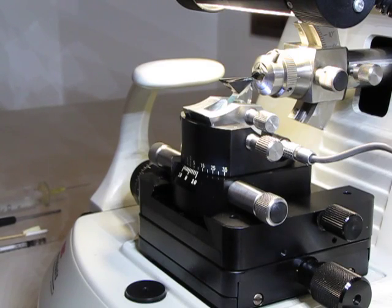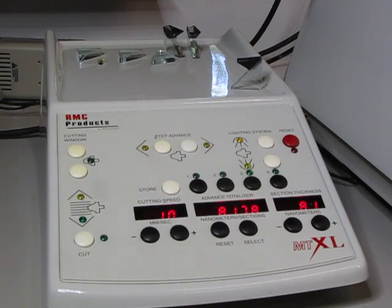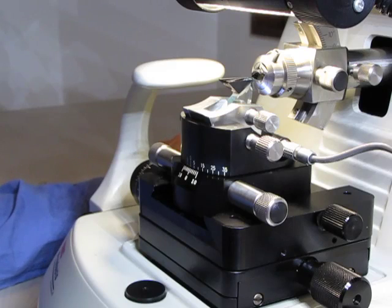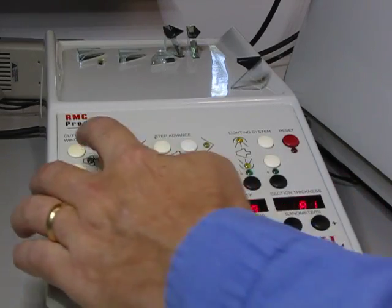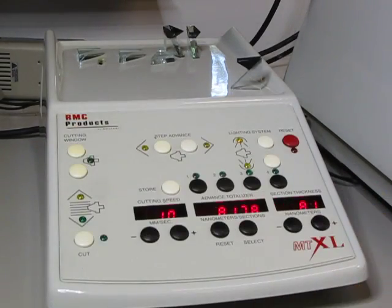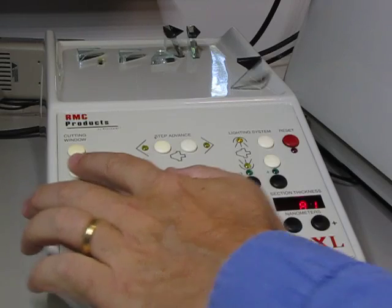Now to cut the thin sections we're going to let the motor do the work. Now the nice thing about this microtome is that it will cut slowly to cut the section and then return to the next cut quickly. But we need to tell it where that slow part is versus the fast part. And that's using the cutting window control on the microtome controller. Position the sample roughly two to three block heights above the knife edge and press the upper cutting window button. Then lower it so that you're just below the knife edge and press the lower cutting window button.